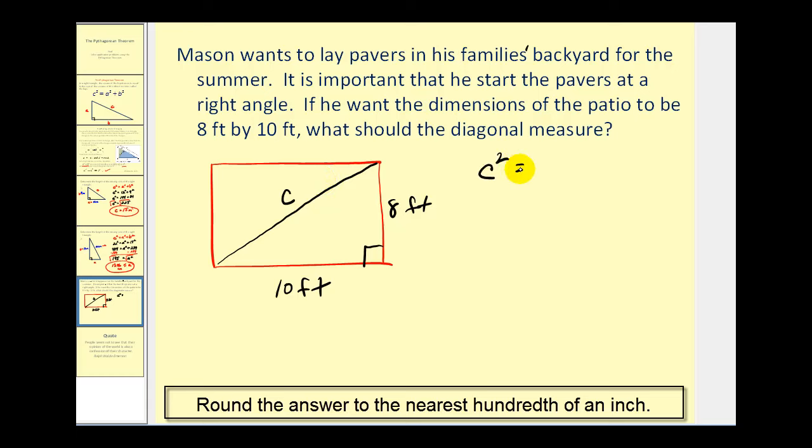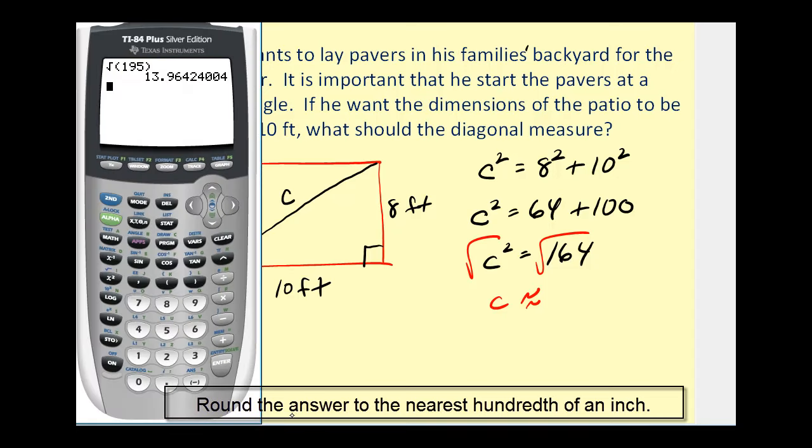C squared must equal eight squared plus ten squared if this is a right triangle and therefore forming a right angle for this patio. So we'd have C squared equals 64 plus 100. C squared equals 164. Now we can square root both sides of the equation. C is going to be approximately the square root of 164. So it's approximately 12.81 feet.